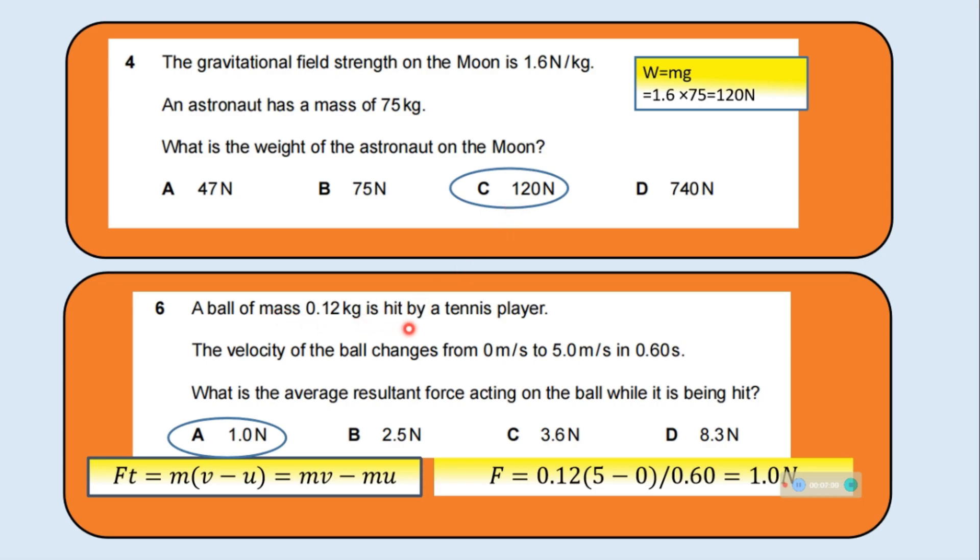A ball of mass 0.12 kilogram is hit by a tennis player. The velocity of the ball changes from 0 meter per second to 5 meter per second in 0.60 seconds. What is the average resultant force acting on the ball while it is being hit? This is the equation for impulse. Ft is equal to change in momentum, m(V minus U). V is the final velocity and U is the initial velocity. Please watch my video where we have discussed in detail impulse equals change in momentum. So F equals change in momentum divided by t, which is 0.12 times (5 minus 0) divided by 0.60. Force F equals 1 Newton.